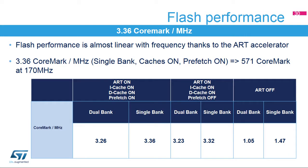Comparing code execution performance at 150 MHz running the EEMBC CoreMark benchmark: the maximum performance is reached when code is executed from CCM SRAM with data in SRAM1. When executing from flash at 150 MHz with the ART accelerator enabled, there is almost no loss of performance despite the flash access time requiring 7 wait states. Enabling the prefetch buffer yields a slightly higher score of 3.36 CoreMark per MHz in single bank mode.